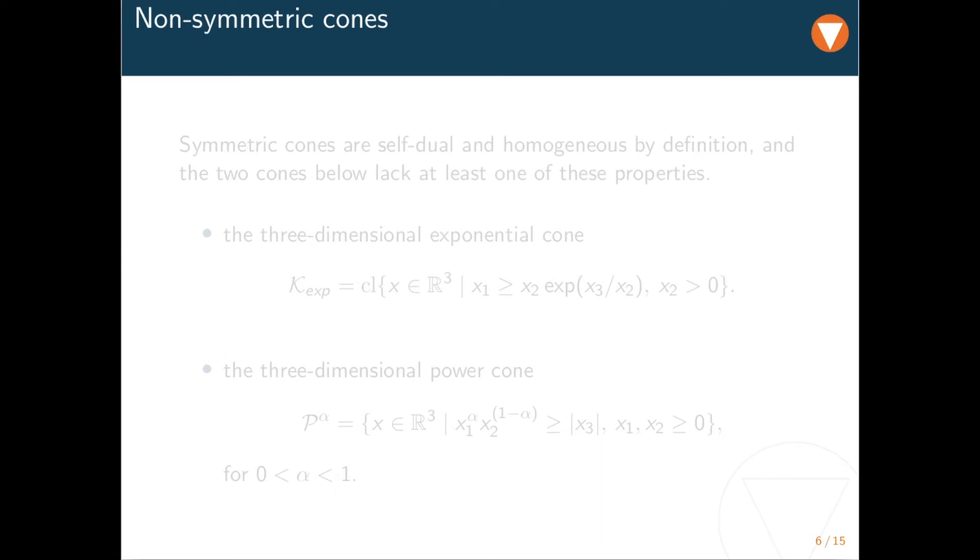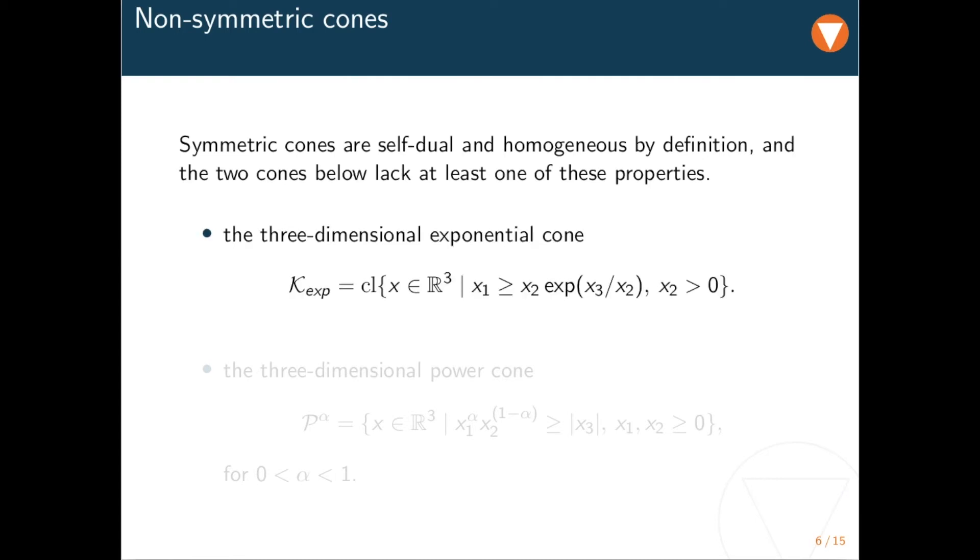We now add two more cones, and this time they are non-symmetric. By definition, a cone is symmetric if it is self-dual and homogeneous. This has some algebraic implications that go beyond the scope of this lecture. We point out, however, that symmetric cones, of which the three seen previously are considered the only that are practically relevant, are easier to handle, both on paper and also as far as algorithmic development is concerned. The exponential cone is given by the closure of the epigraph of the perspective of the exponential function, and is thus defined in three dimensions.